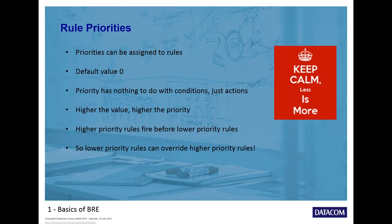Rule priorities: a priority can be assigned to a rule — not to individual actions or conditions, but to a rule within the policy. The default priority value is always zero, and priority has nothing to do with conditions, just actions. The higher the value, the higher the priority, and higher priority rules fire before lower priority rules. So a rule with priority one fires before a rule with priority zero — but that means the priority-zero rule fires second and could effectively override the priority-one rule if they have conflicting actions.